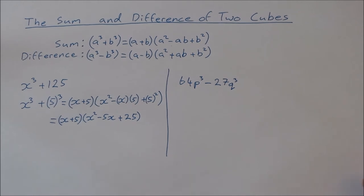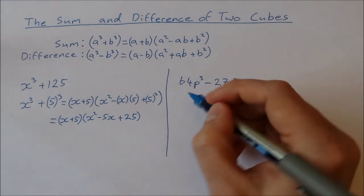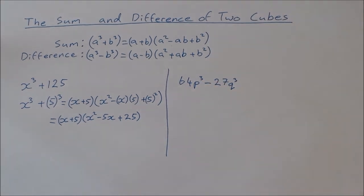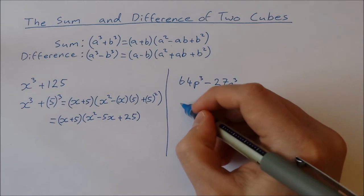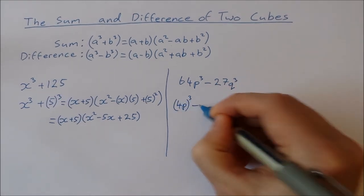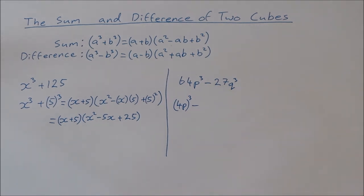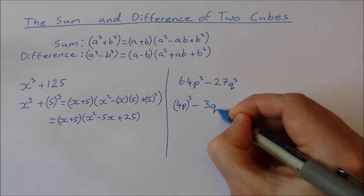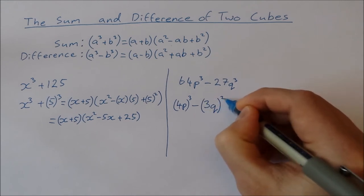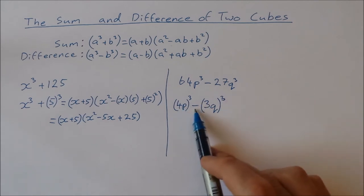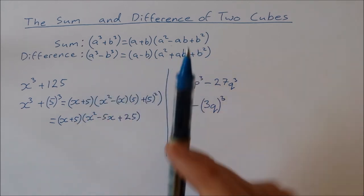Now let's take a look at this other example over here which is a little bit trickier. I'm going to rewrite this as, well 64 is actually 4 times 4 times 4. So that's 4p cubed minus 27 is 3 times 3 times 3. So that's 3q cubed. And now we have the difference of 2 cubes. So we're going to use this formula here.